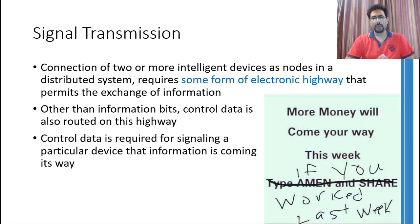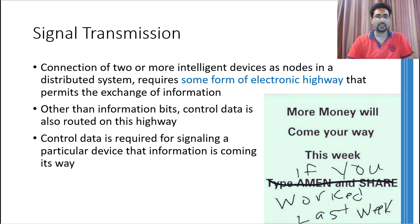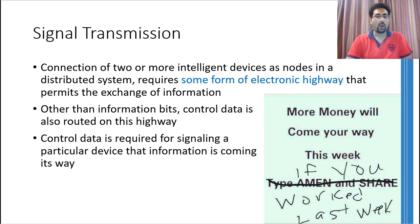Now, as we have established that there are a number of intelligent devices that are going to communicate with each other, there should be some kind of electronic highway over which the data should be routed. This electronic highway should make sure that the data reaches its desired destination and there are no collisions between different data packets. Other than the information bits, the electronic highway should be capable of routing control bits along with the data. These control bits indicate to connected devices what kind of data is coming their way.